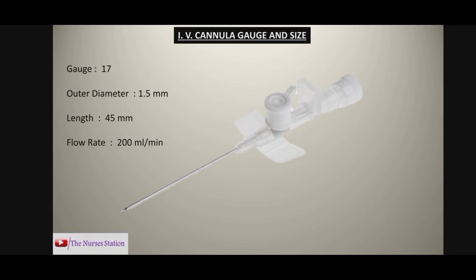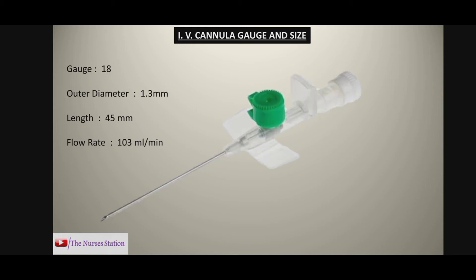Then there is the white cannula with a gauge size of 17, outer diameter of 1.5 mm, length of 45 mm, and a flow rate of 200 ml per minute. After this, we have the green colored cannula with a gauge size of 18, outer diameter of 1.3 mm, length of 45 mm, and a flow rate of 103 milliliters per minute. The first four — orange, gray, white, and green — are called the wide bore cannulas and are used for the quick administration of medications, blood, and blood products because they have a large diameter compared to other cannula types.